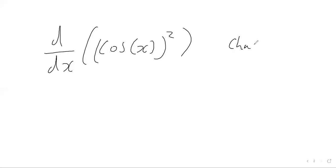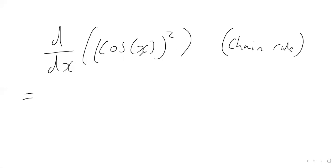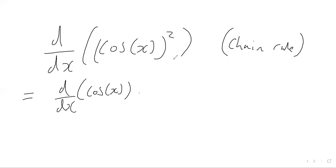So to use the chain rule, using the same process from previous videos, what we're going to do is differentiate the inside of the squared function — that is, differentiate cos with respect to the variable x. Then we multiply that by the derivative of the squared function with respect to cos x.